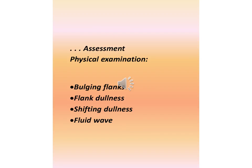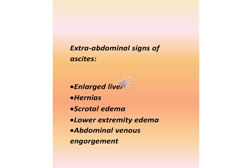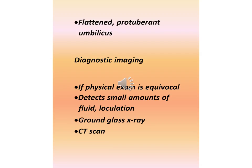Assessment — physical examination: bulging flanks, flank dullness, shifting dullness, fluid wave. Extra-abdominal signs of ascites include enlarged liver, hernias, scrotal edema, lower extremity edema, abdominal venous engorgement, and flattened or protuberant umbilicus.